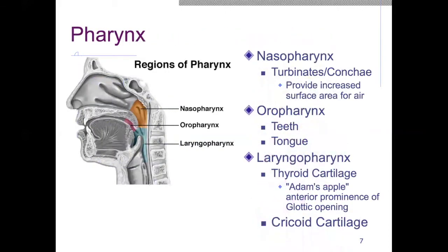Now we have the regions of our pharynx. We have the nasopharynx, which runs from the nose down to where the uvula drops. We have the oropharynx, which goes from the mouth to the uvula. Below that, these two combine to create the laryngopharynx, which extends from the uvula down to the level of the trachea.